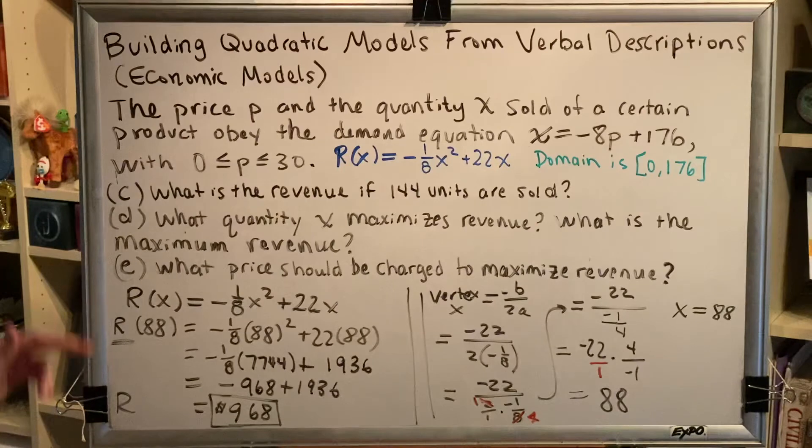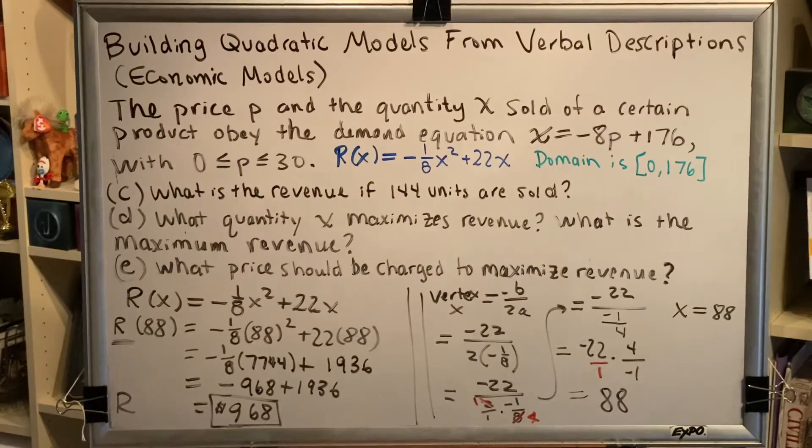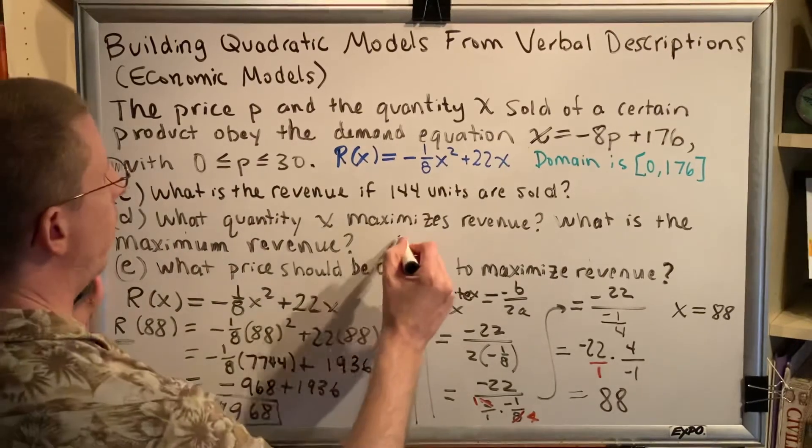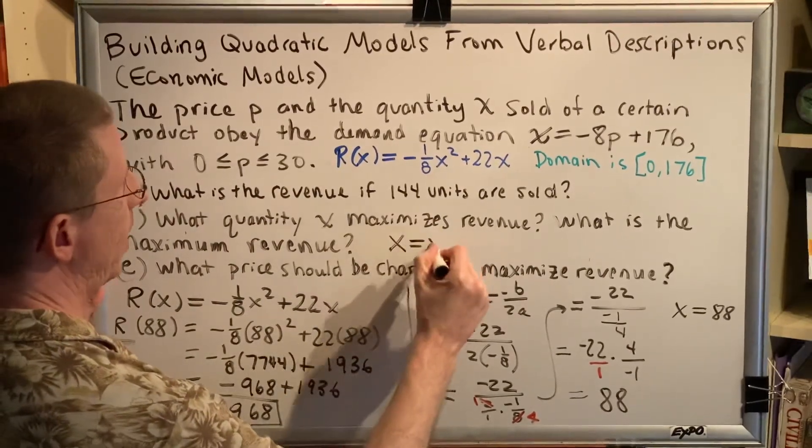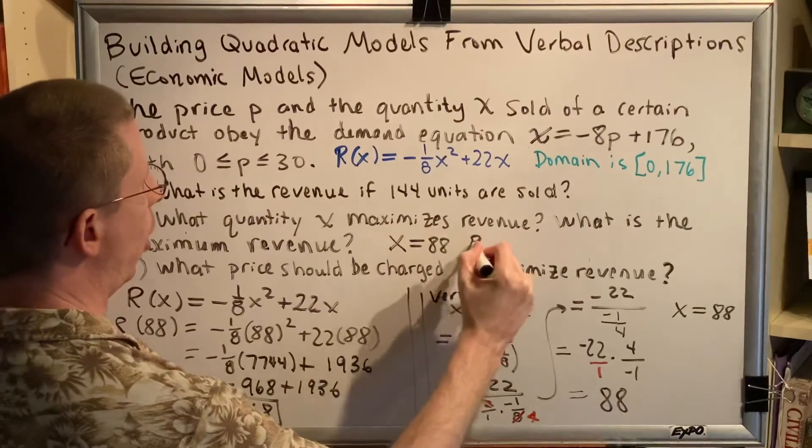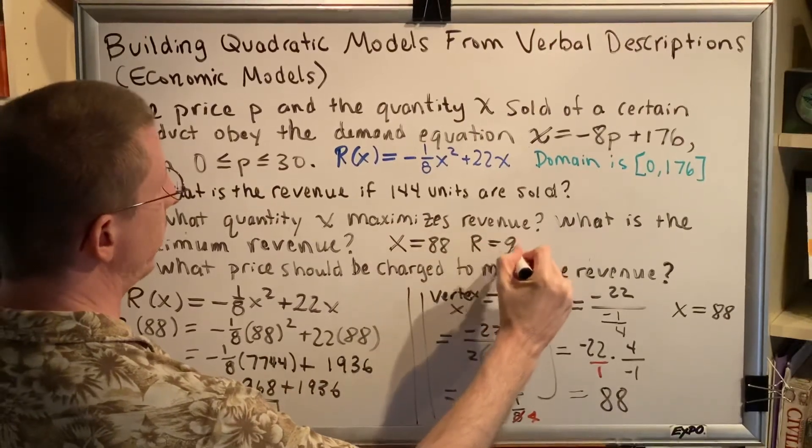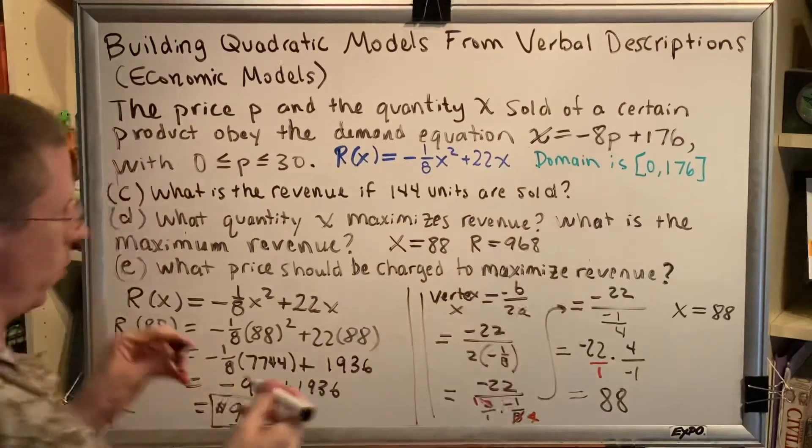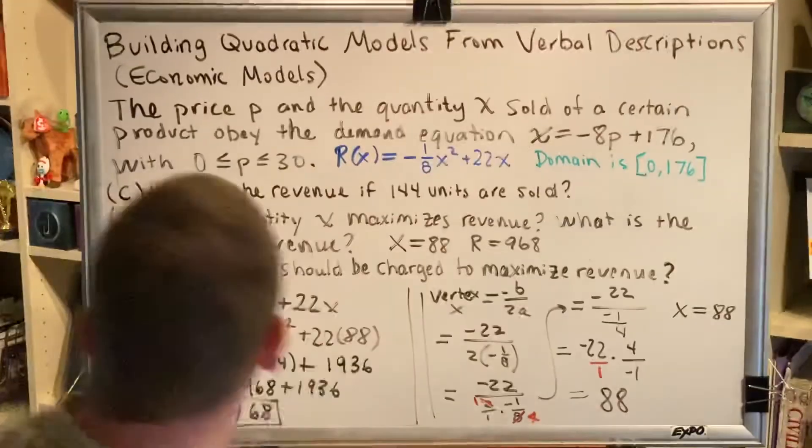Okay, and that brings us to Part E. What price should be charged to maximize the revenue? Well, let's think about what we've learned so far. We've learned that x was equal to 88 and we've learned that r was equal to 968.